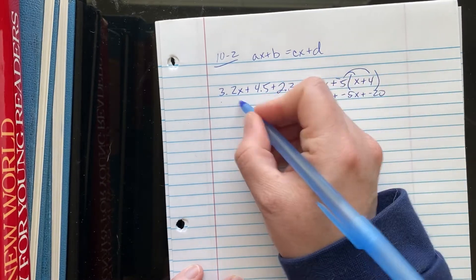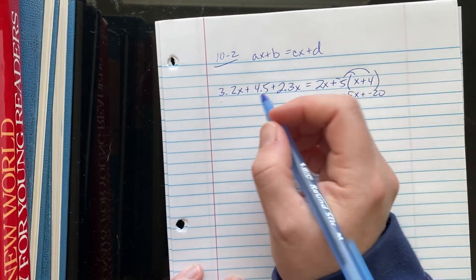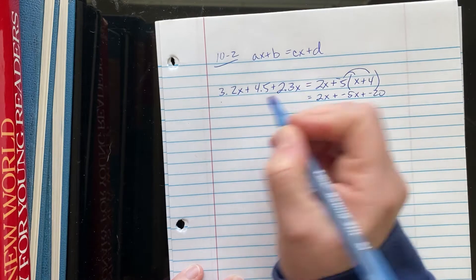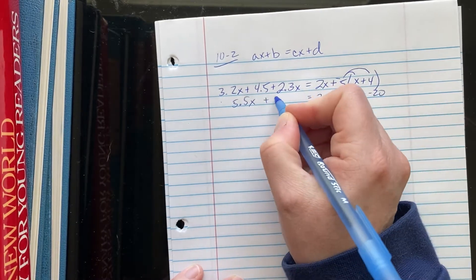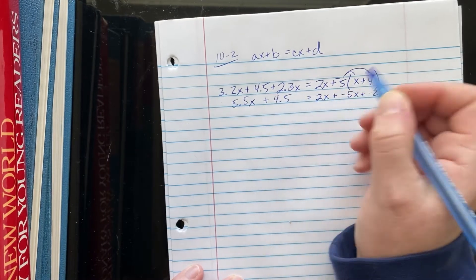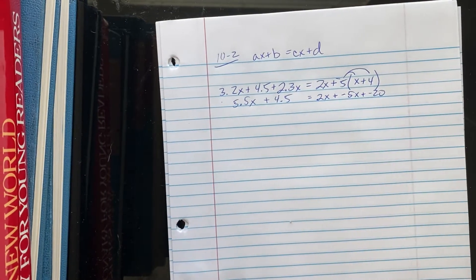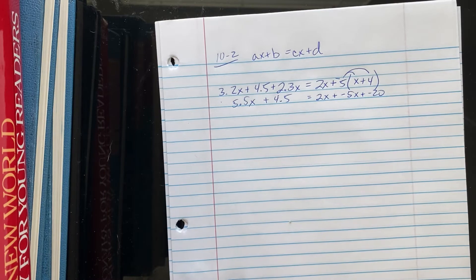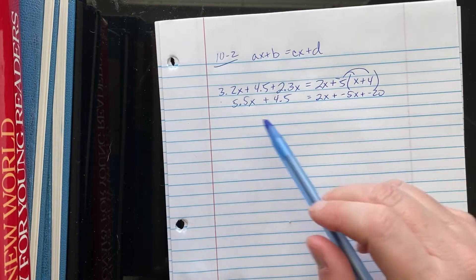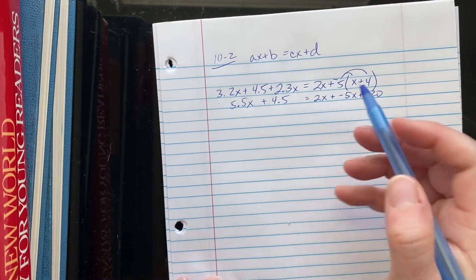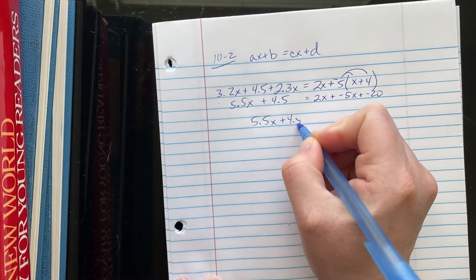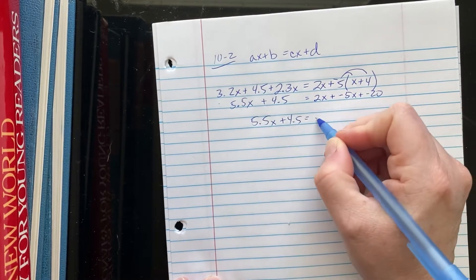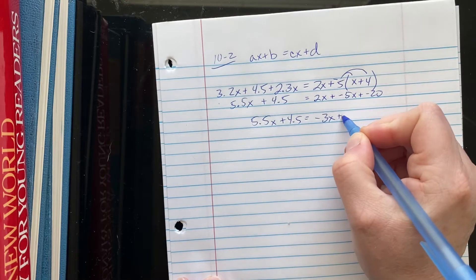I guess I could combine these two like terms. That's not terrible. 5 and 5 tenths X plus 4 and 5 tenths. Wait, I can combine one more like term over here. 5 and 5 tenths X plus 4 and 5 tenths equals negative 3X plus negative 20.